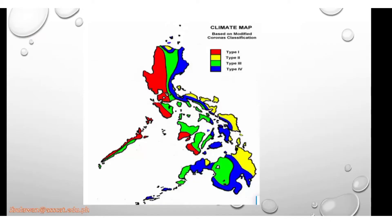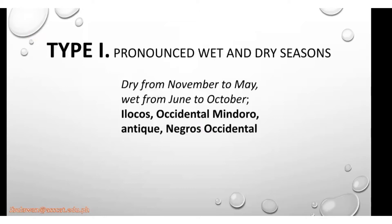As you can see, we have the map of the Philippines colored with red, green, blue, and yellow. These colors represent the four types of climates in the Philippines. For Type 1, places have pronounced wet and dry seasons — dry from November to May and wet from June to October. The places are Ilocos, Occidental Mindoro, Antique, and Negros Occidental.